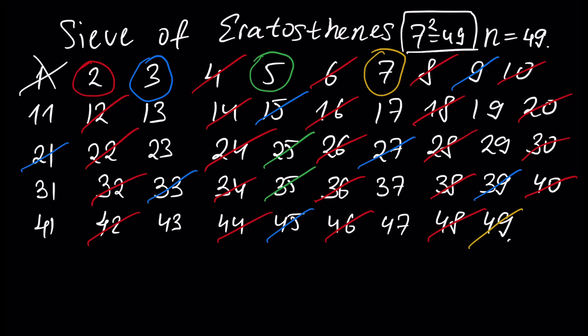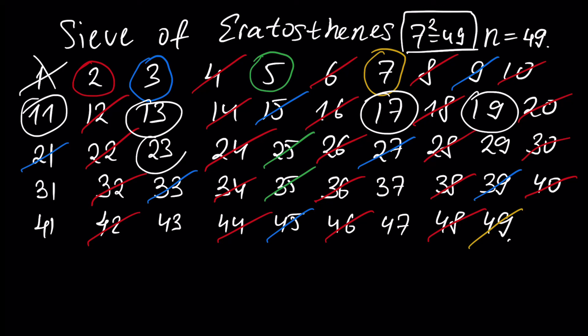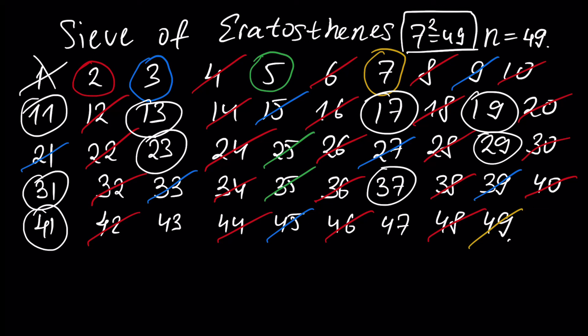And that's all. We found all the numbers — the not-crossed-out numbers are prime numbers. These numbers are: prior to seven — two, three, five, seven — and the next not-crossed-out numbers are eleven, thirteen, seventeen, nineteen, twenty-three, twenty-nine, thirty-one, thirty-seven, forty-one, forty-three, and forty-seven. These numbers are prime numbers prior to our given number, 49.